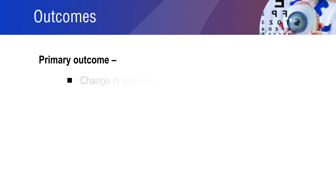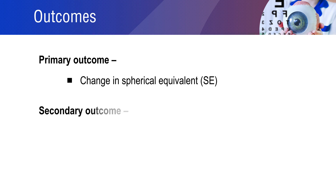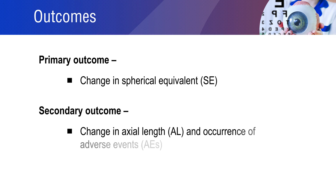The primary outcome of the study was myopic progression, measured by a change in spherical equivalent. The secondary outcome included axial length elongation. The adverse events related to the treatment were also evaluated to confirm the safety.